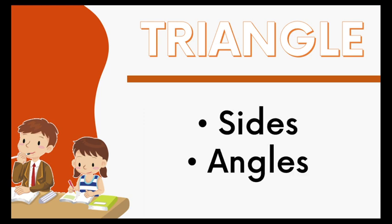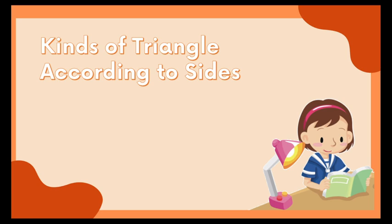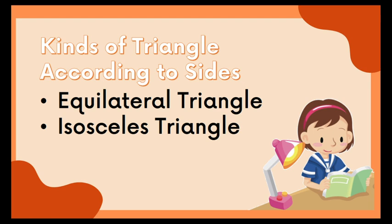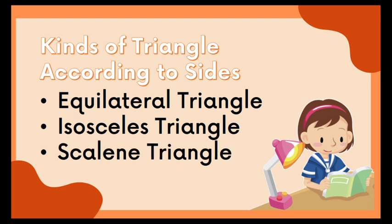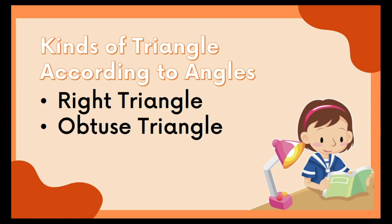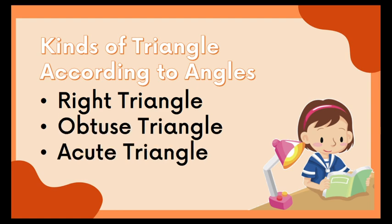Again, triangles can be grouped according to its sides and according to its angles. The kinds of triangles according to sides: an equilateral triangle has all sides equal; an isosceles triangle has only two sides equal; and the scalene triangle has no equal sides. The kinds of triangles according to angles: we have the right triangle, the obtuse triangle, and the acute triangle.